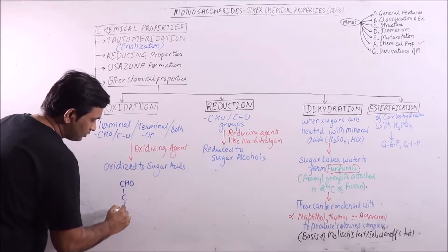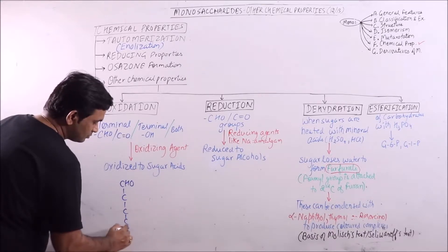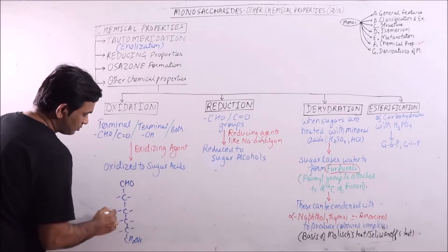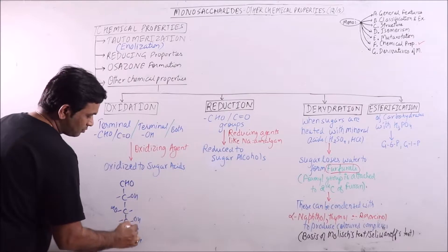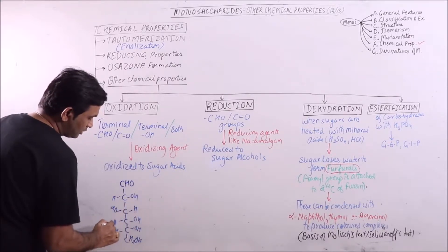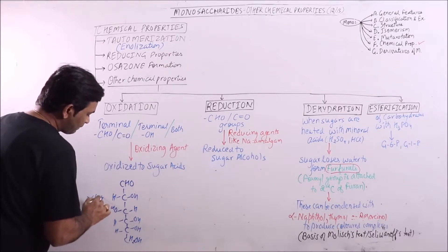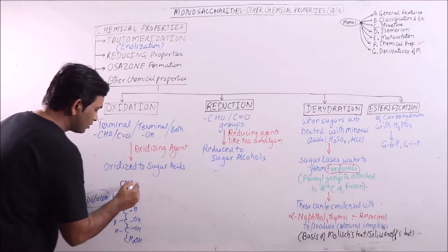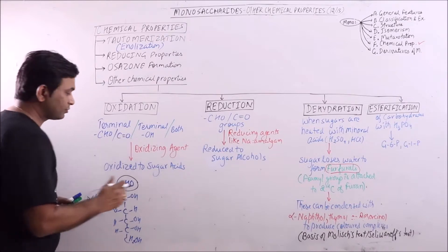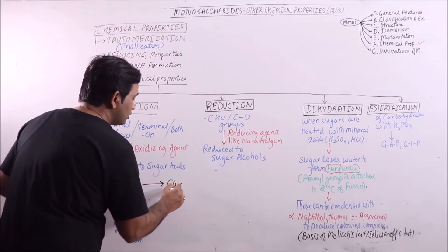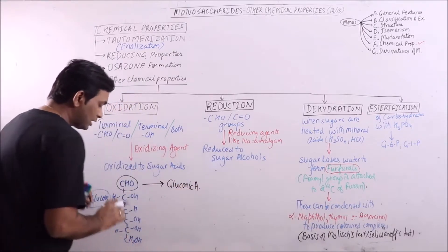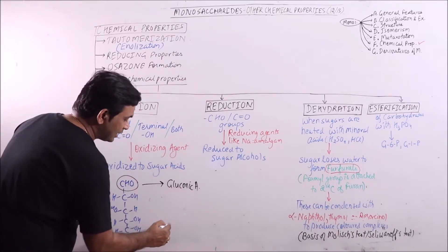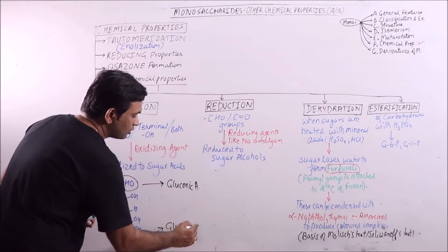if I am taking D-glucose, this is D-glucose. In D-glucose if aldehyde group is oxidized then it will result in formation of gluconic acid. And if in D-glucose terminal CH2OH group is oxidized then it will result in formation of glucuronic acid.